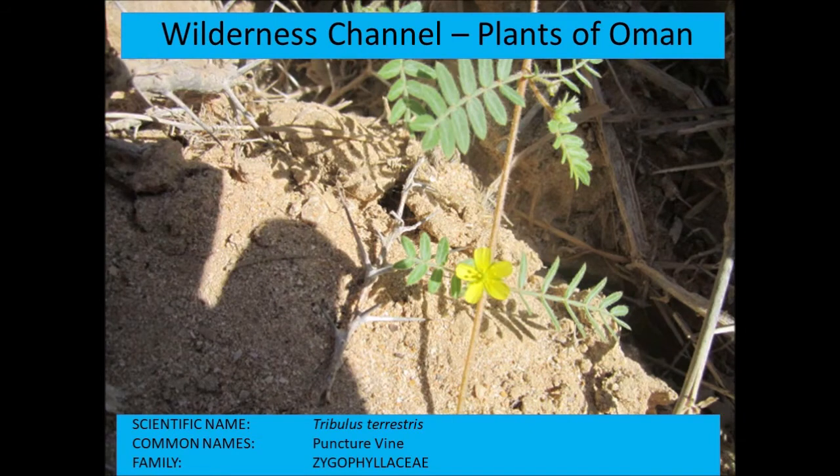Tribulus terrestris — the puncture vine — is a weed found in many parts of the world. It's called a puncture vine because it produces seeds with very sharp spines that puncture all kinds of things, including people's feet.